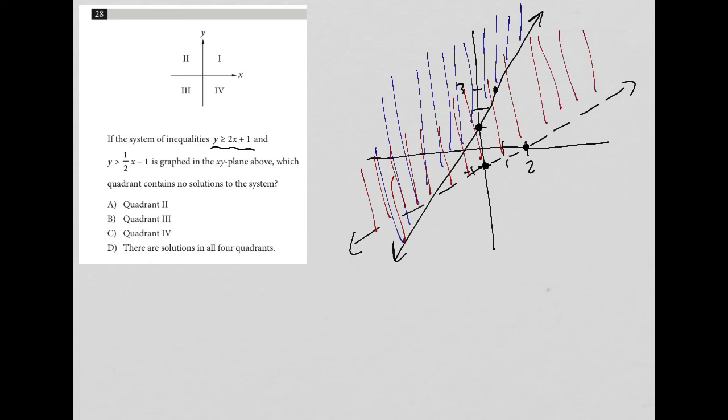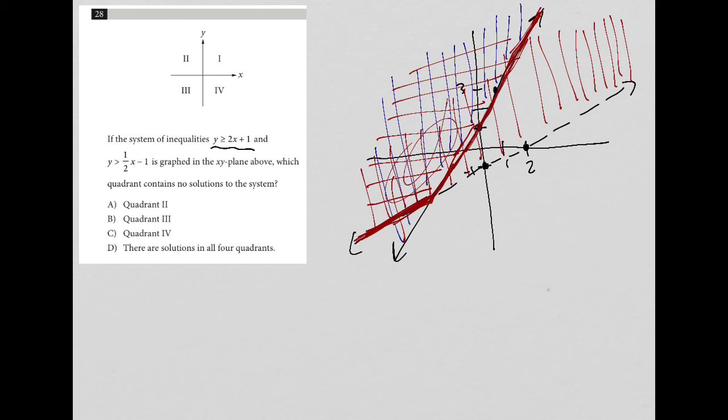Now, if you recall, the solution set for a system of inequalities is wherever you see the overlap. In this case, it's the red and blue vertical lines. And now I'm drawing horizontal lines. So we would have solution, basically everything above here. So I'm going to just darken this with red. So above the dashed line here, but then above the solid line here is where we have an overlap. So all of this.